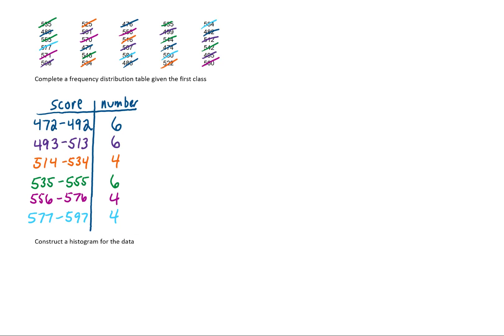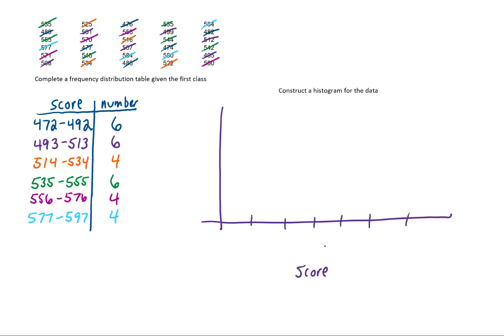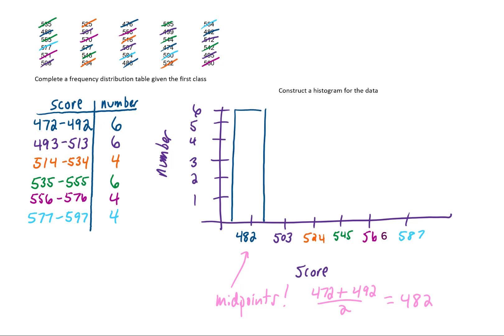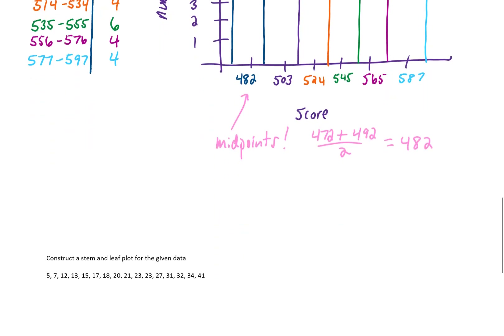Let's construct a histogram for this data. On the horizontal axis we have our classes or scores — we have 6 classes, so 6 tick marks. On the vertical axis we have frequency, with the highest being 6. For each class on the horizontal axis, we put the midpoint as the value. For our first class, 472 to 492, the midpoint is (472 + 492) / 2 = 482. Calculating the midpoints of all other classes gives all the values, and then we draw the histogram using frequency as the height of each bar.